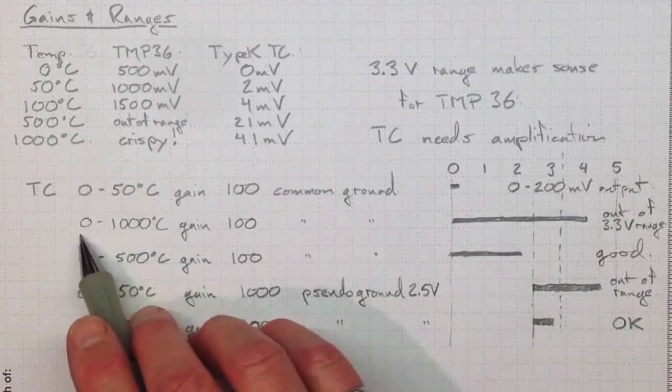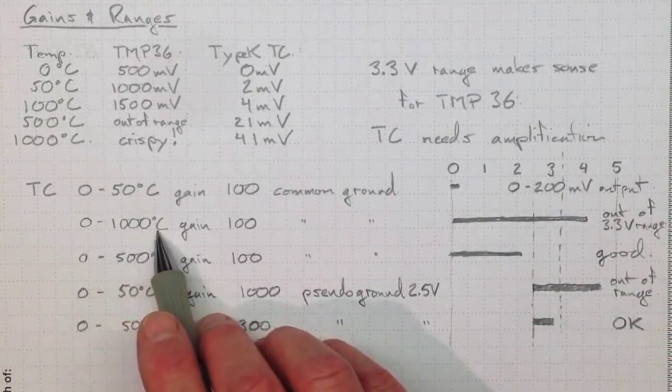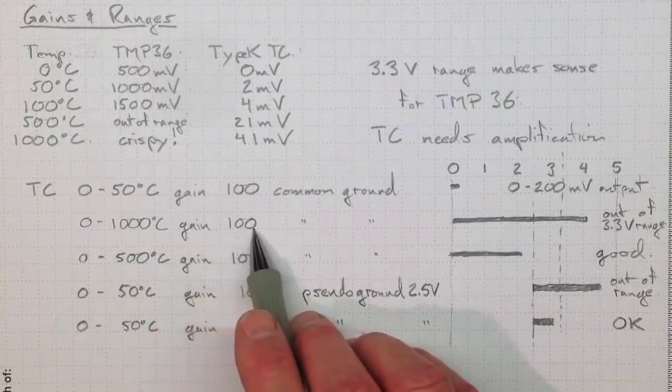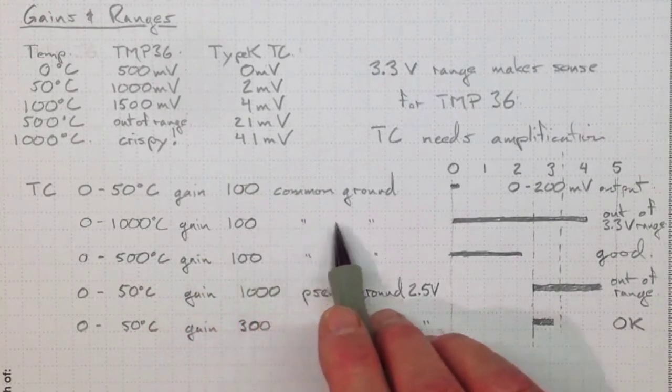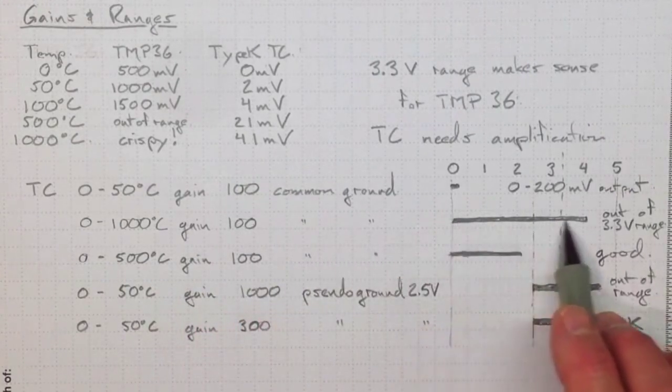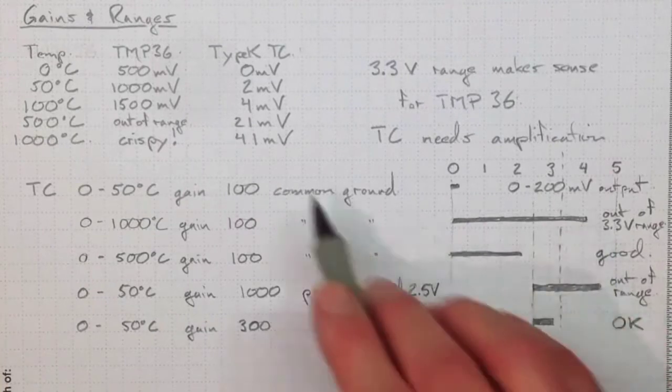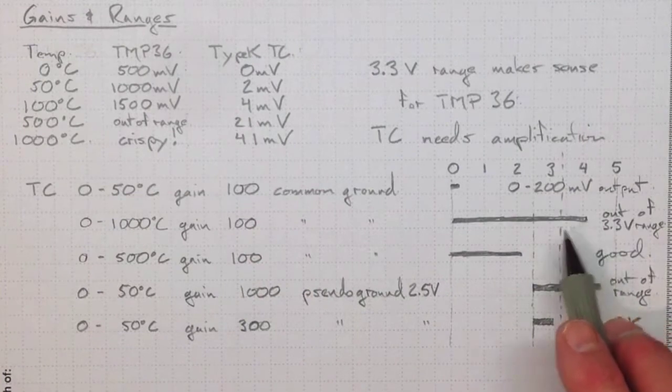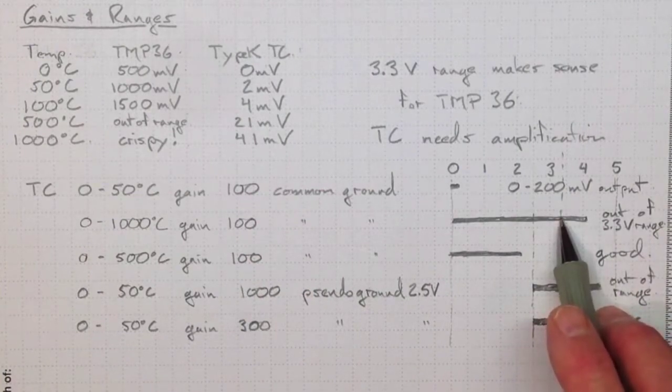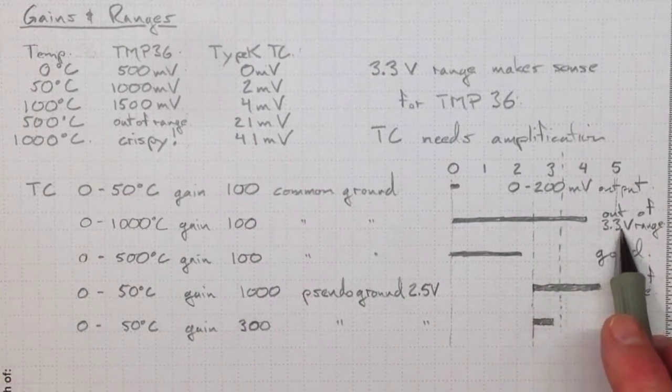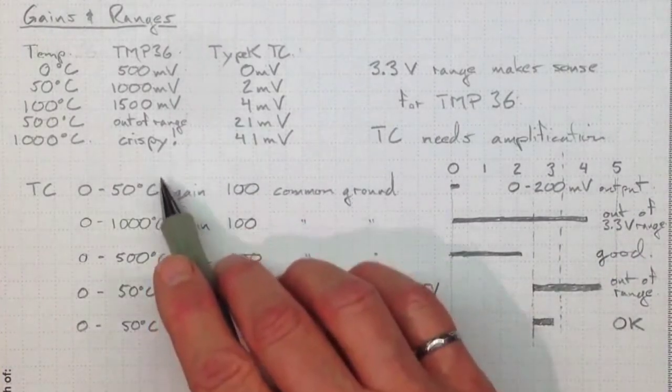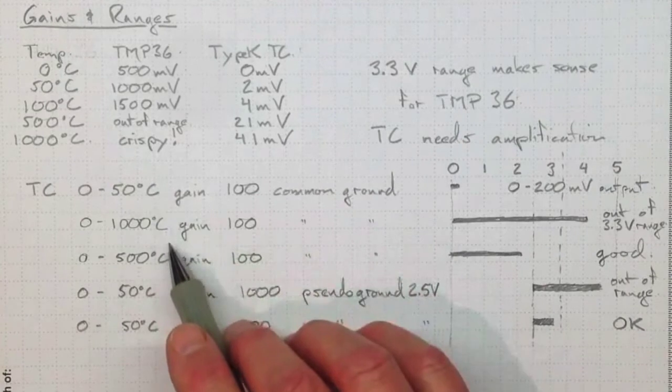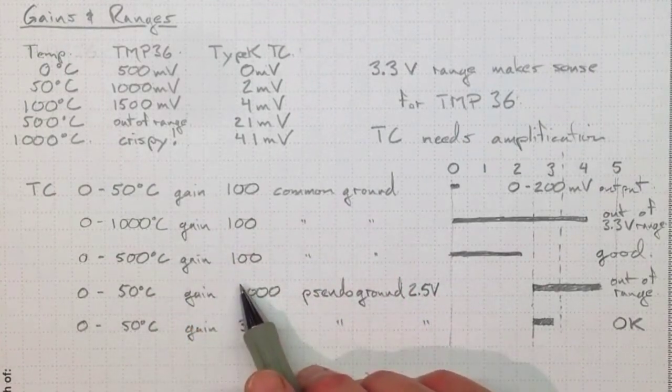On the other hand, if we're interested in temperatures going up quite high to a thousand degrees Celsius and we use that same gain of a hundred with a common ground, we'd go from zero up to about 4100 millivolts - 41 millivolts times a hundred gain, so 4.1 volts - and we're out of the range that we can record with the 3.3 volt input on our Arduino. So it's important to know what temperatures you're trying to measure and what range of voltages you'll get out of your transducers.